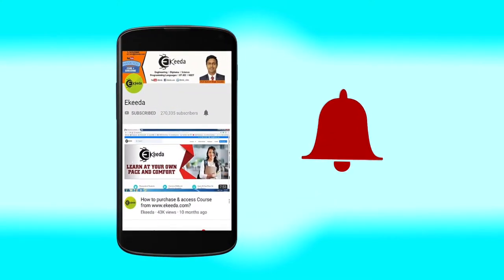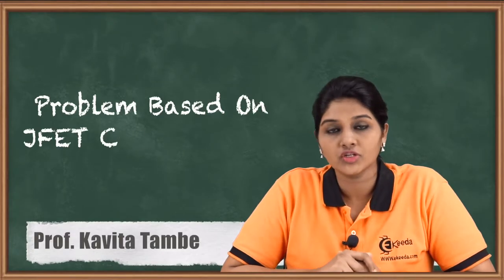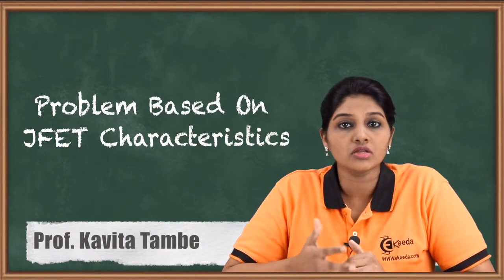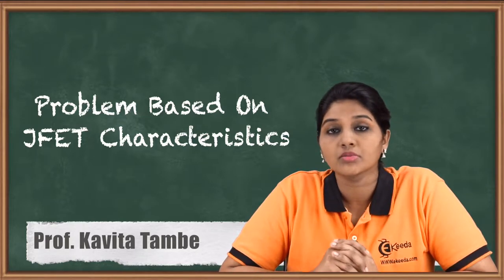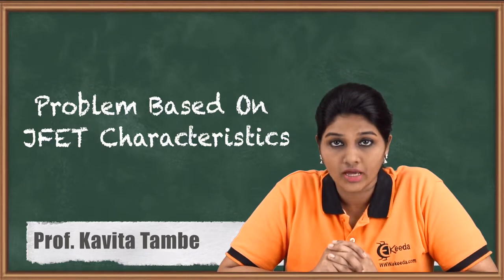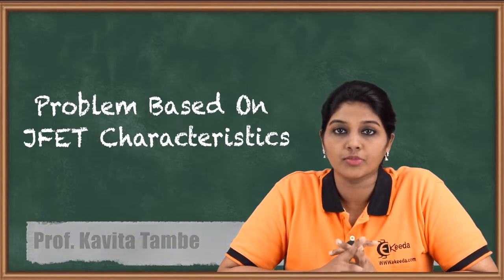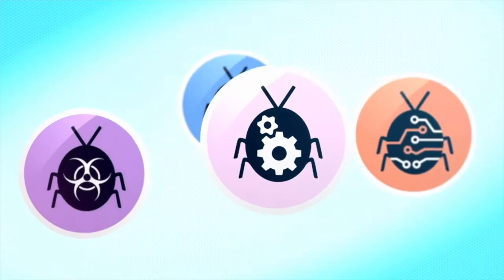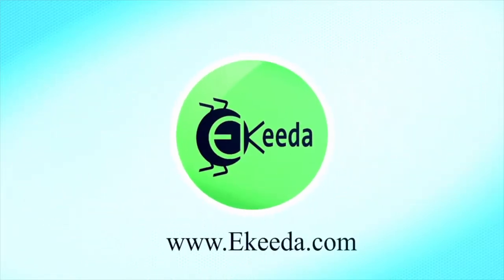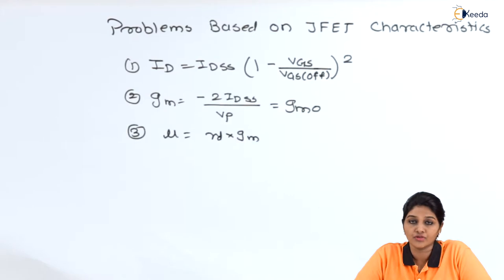Hello friends, in today's video we are going to see various problems based on various characteristics of JFET. The important characteristics we are going to consider are transconductance, amplification factor, and drain current — how to calculate them using the relevant formulas. Before starting with the problems, let's first summarize a few formulas related to the various characteristics of JFET.